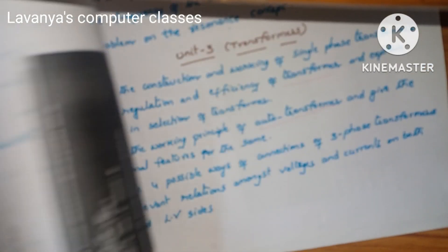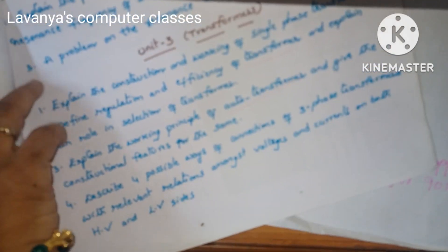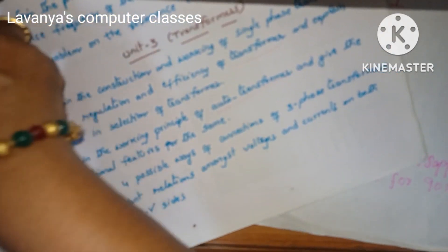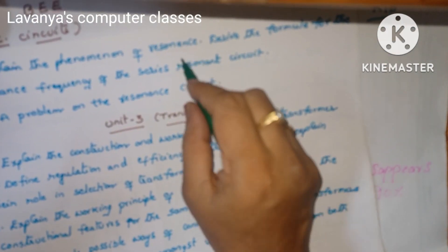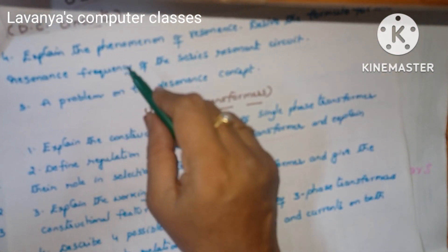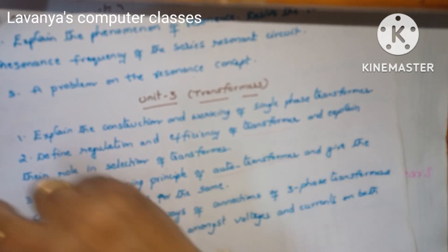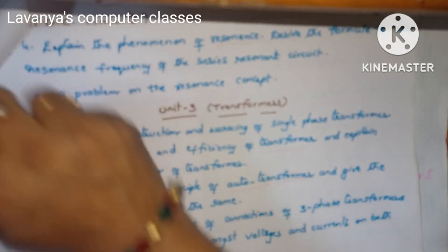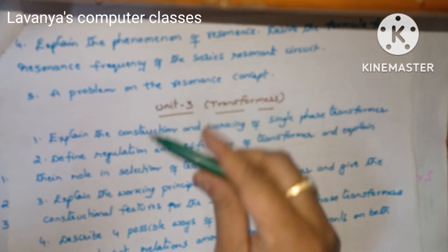These are some of the important questions. The next important questions are: explain the phenomenon of resonance, derive the formula for the resonance frequency of the series resonance circuit, and a problem on the resonance concept.